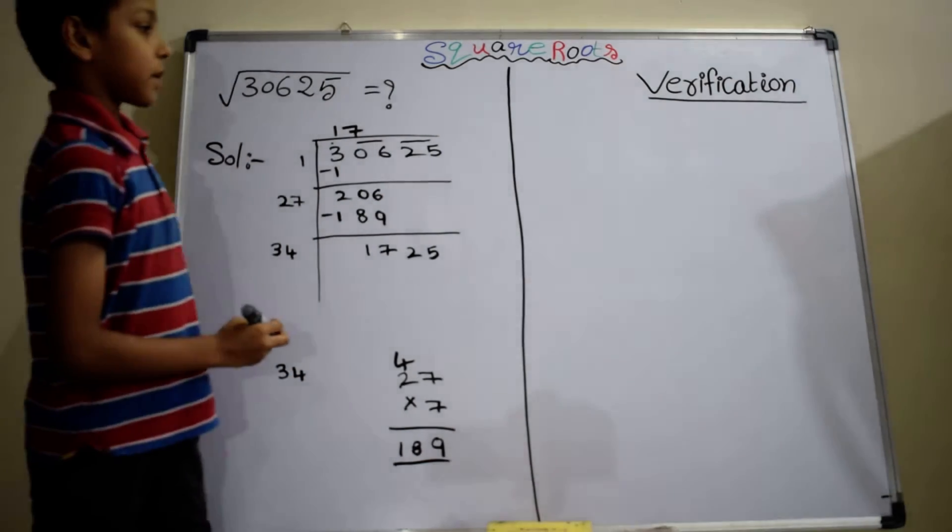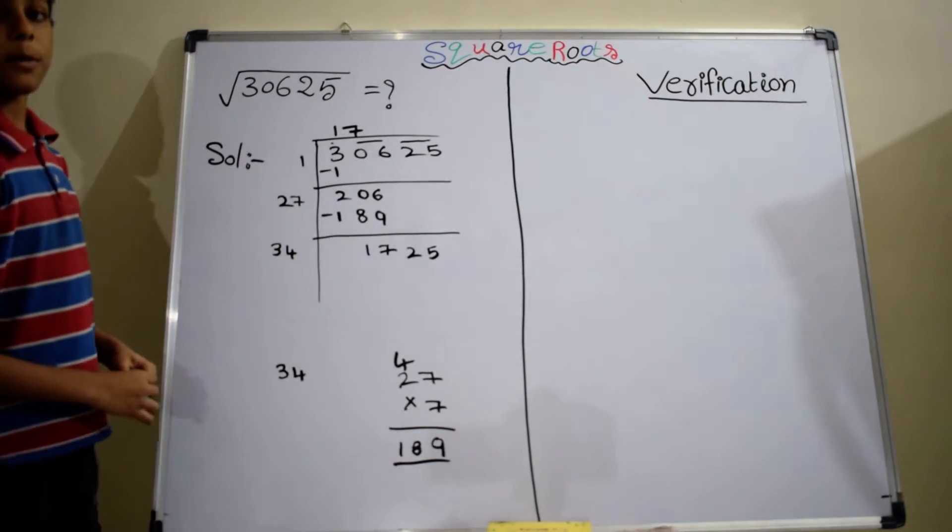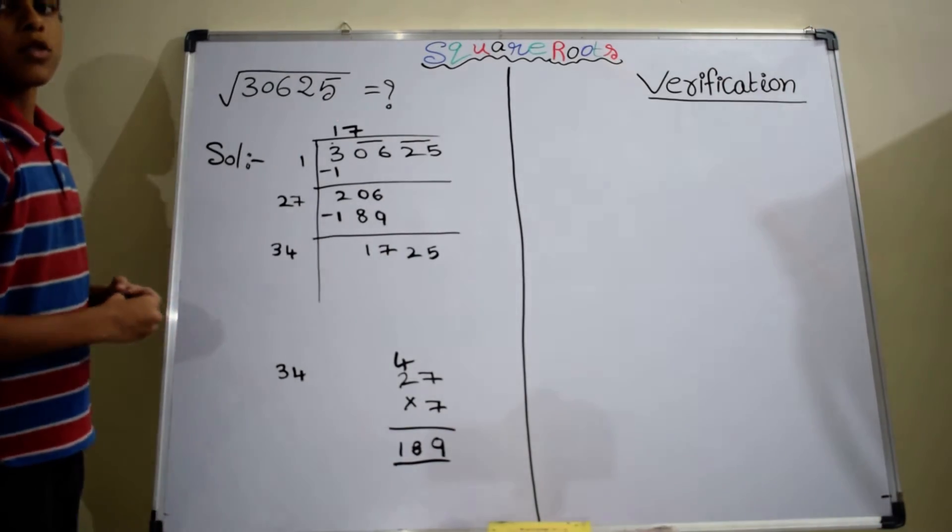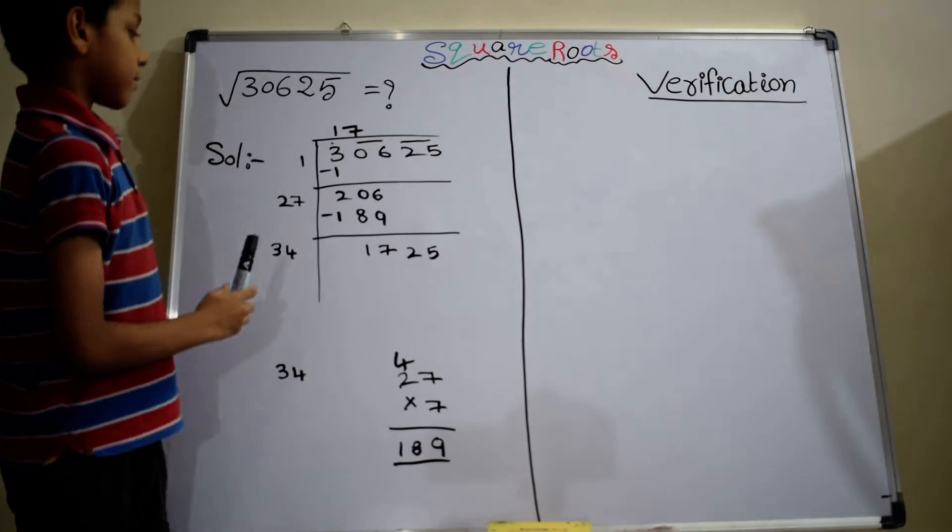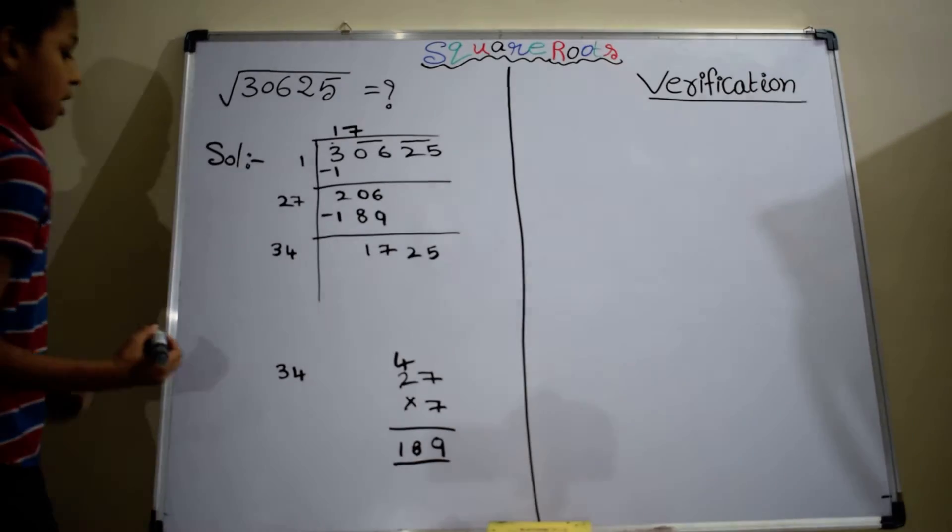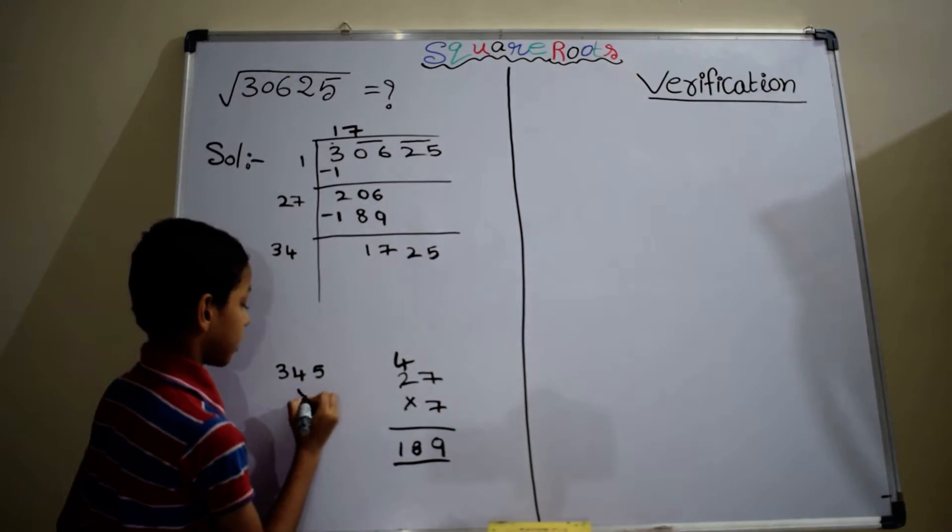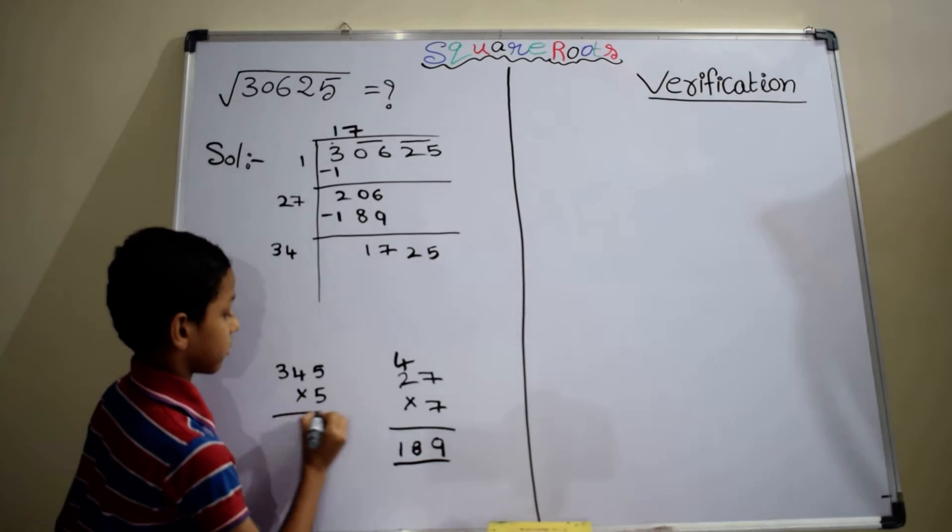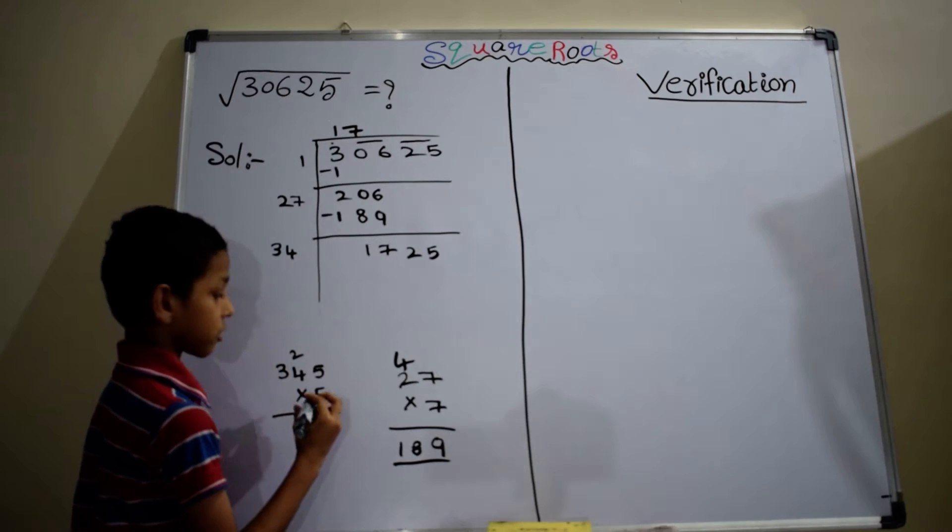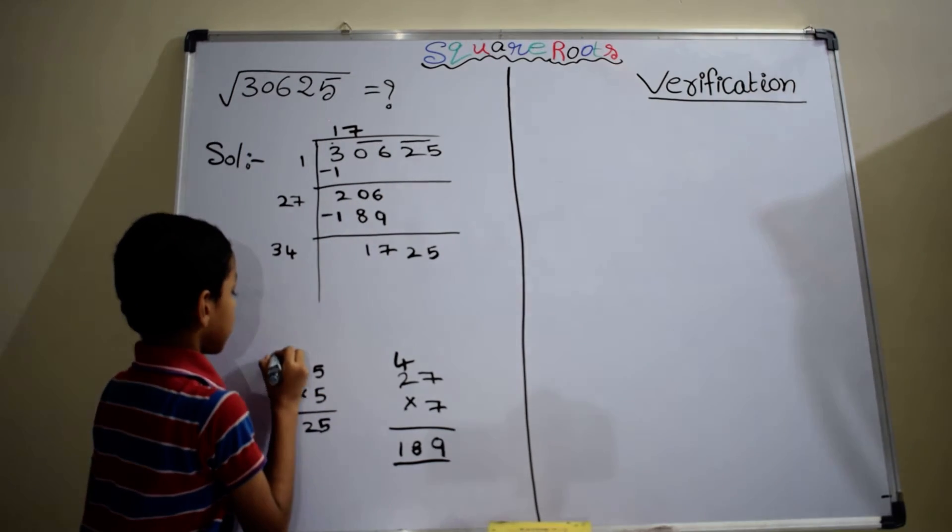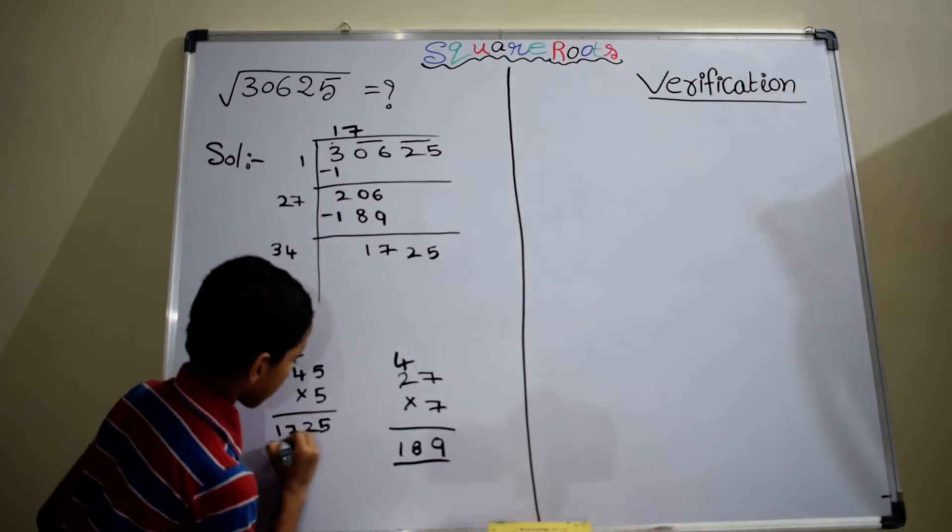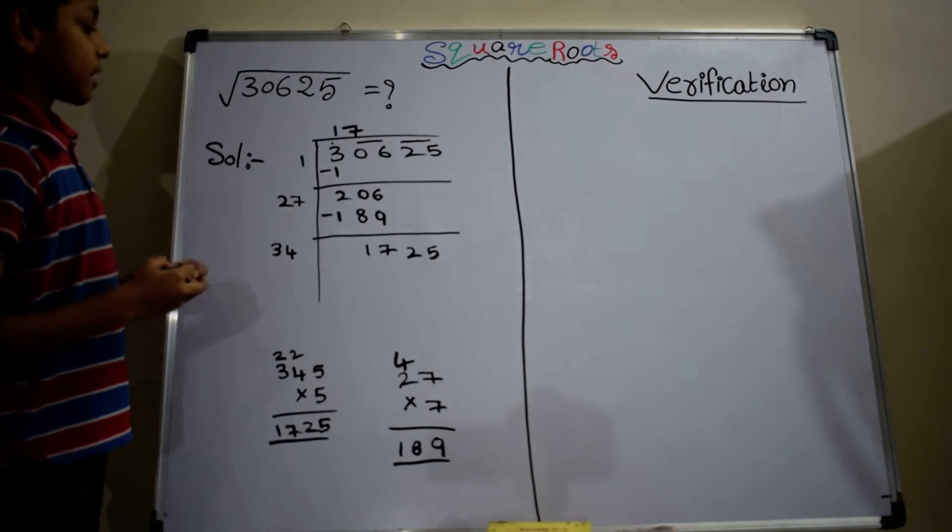In this step, here, we have to take the number besides 34. When you multiply with that number, you have to get number 1725. Approximately, I am taking 5. 5 into 5, 25. 4 into 5, 20 plus 2, 22. 3 into 5, 15 plus 2, 17. Oh, luckily, we got 1725.